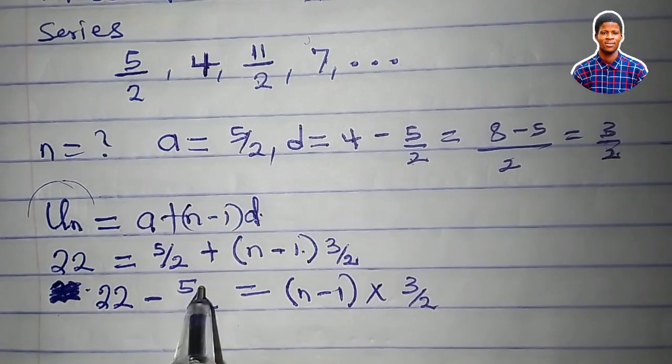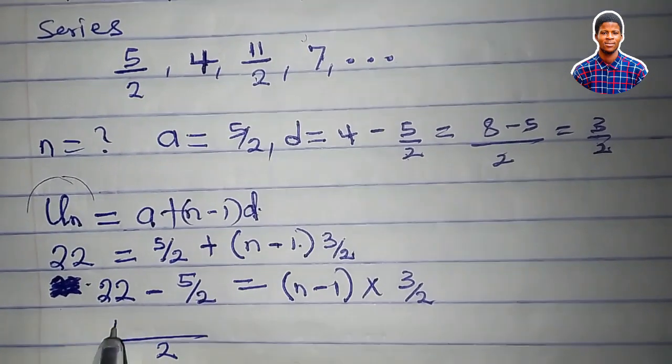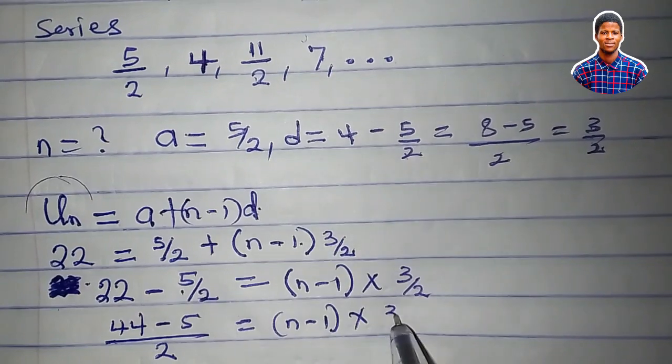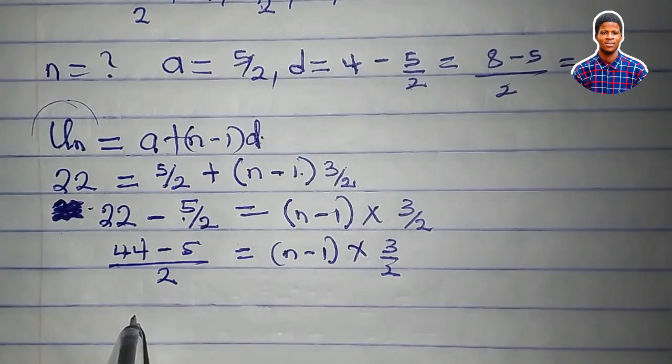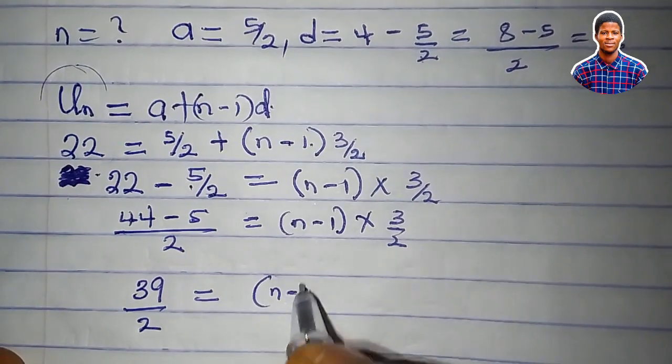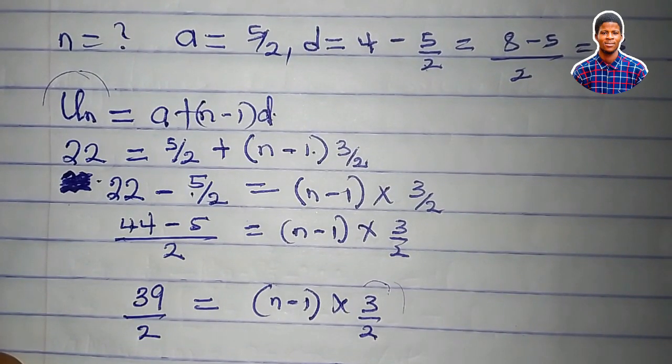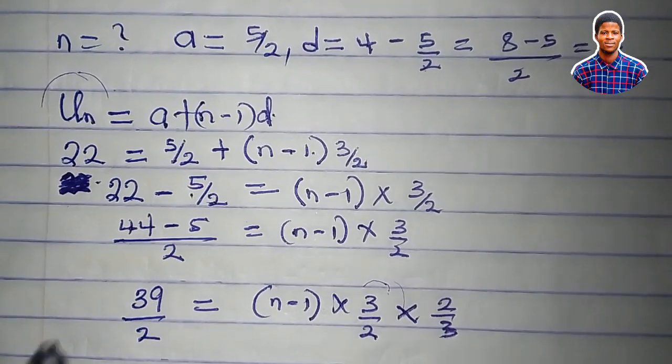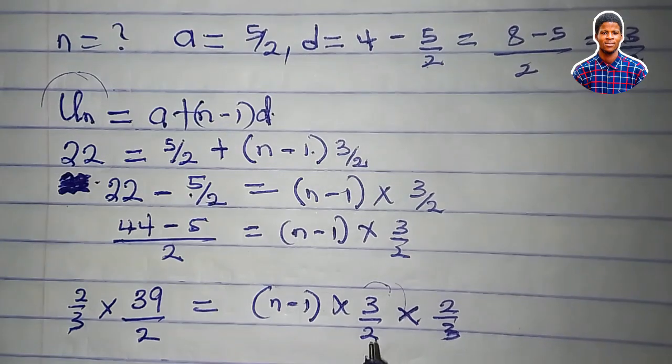Let's simplify this by LCM. All over two. Two times twenty-two is forty-four, then minus five. So we have forty-four minus five, which is thirty-nine upon two, equals (n minus one) times three all over two. I need to remove this three over two here. So I'll multiply both sides by the reciprocal of three over two.